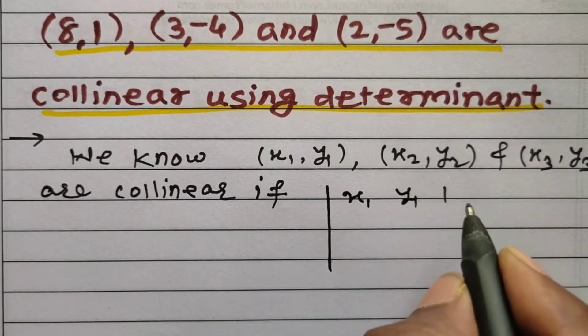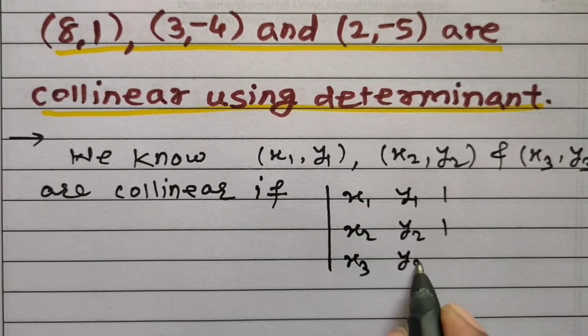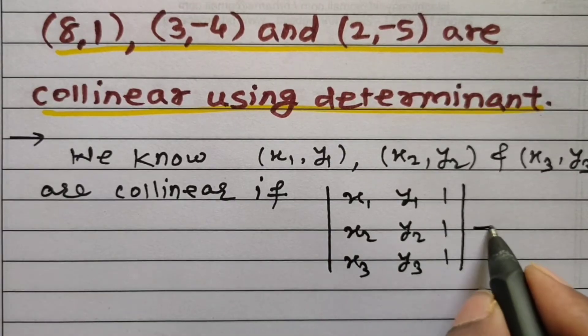x1, y1, 1, x2, y2, 1, x3, y3, 1 is equal to 0.